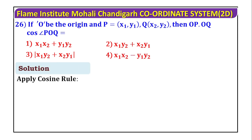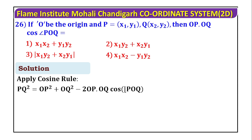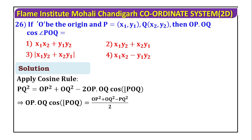The solution is to apply the cosine rule: PQ² = OP² + OQ² - 2·OP·OQ·cos(POQ). So OP·OQ·cos(POQ) equals OP² + OQ² - PQ², upon 2. Therefore the answer is x1·x2 + y1·y2, so option 1 is the right answer.